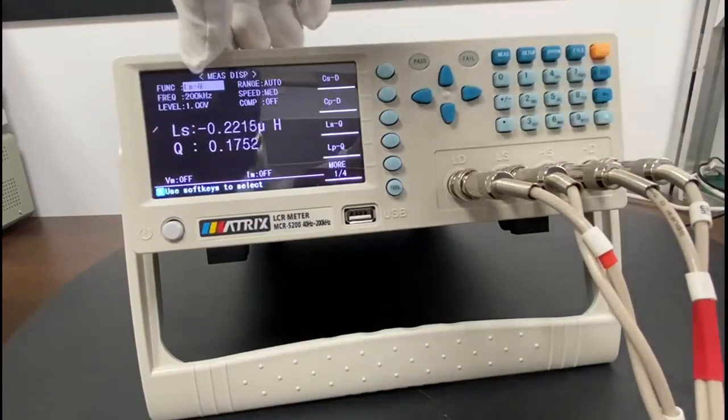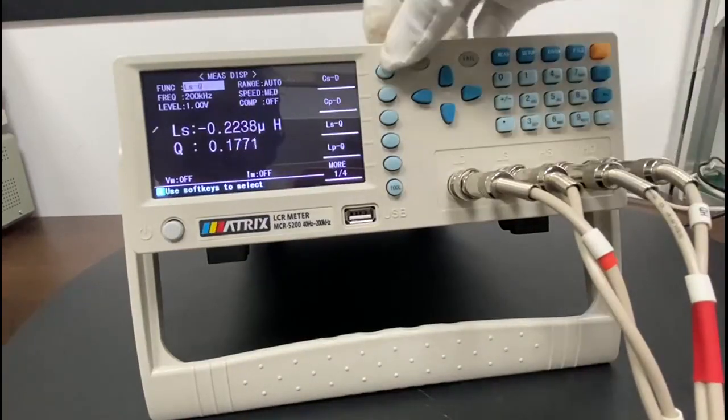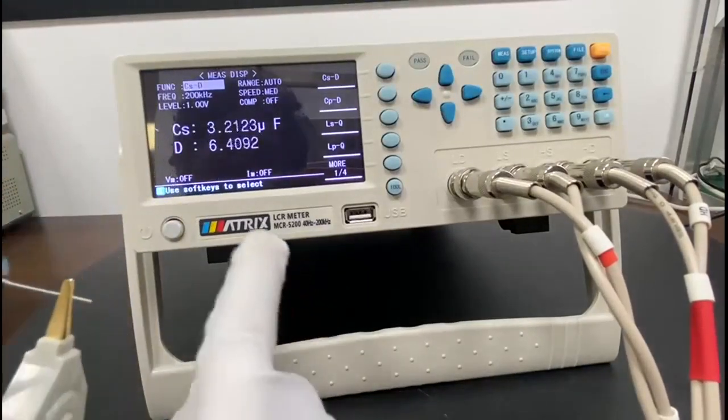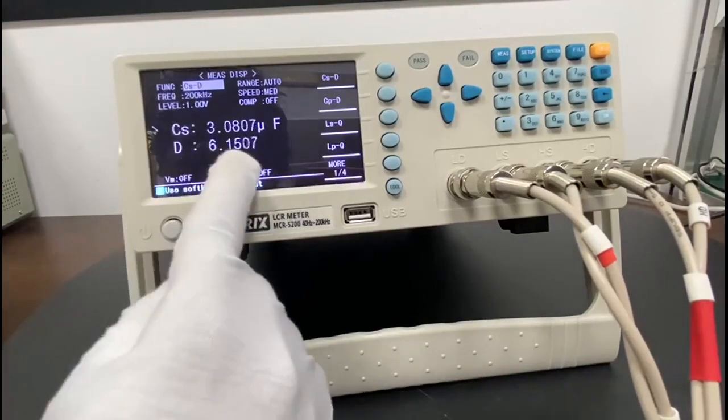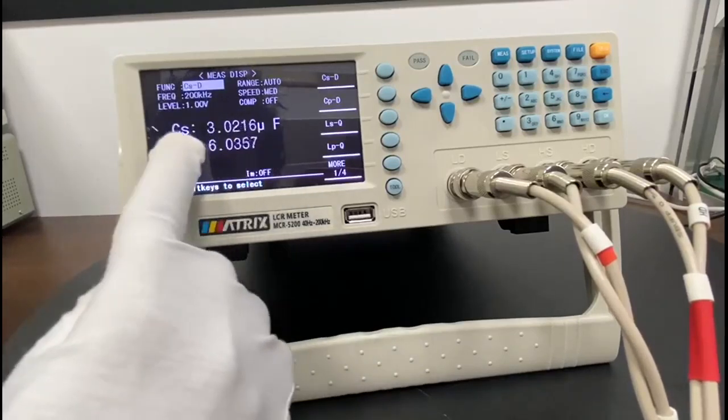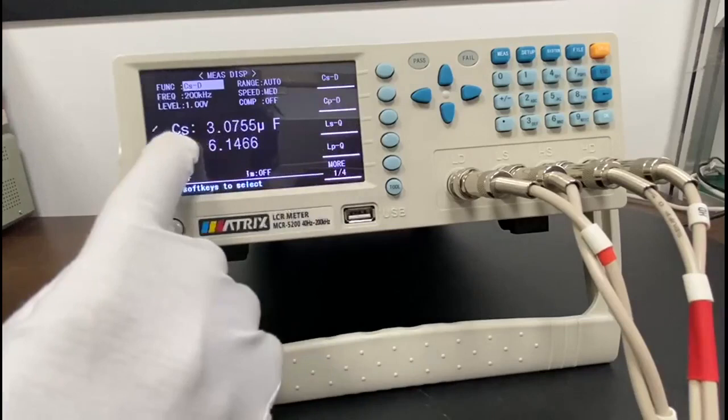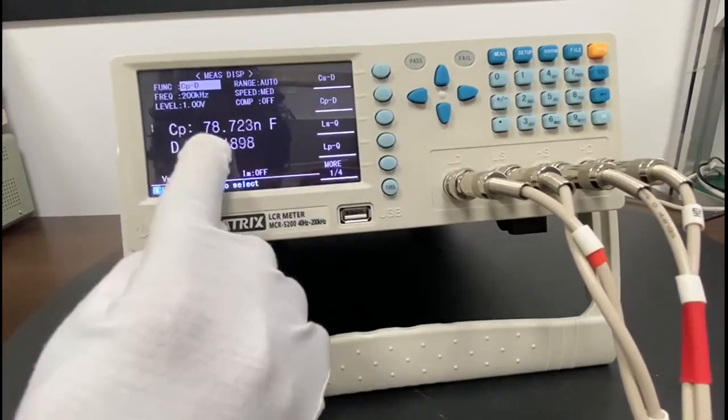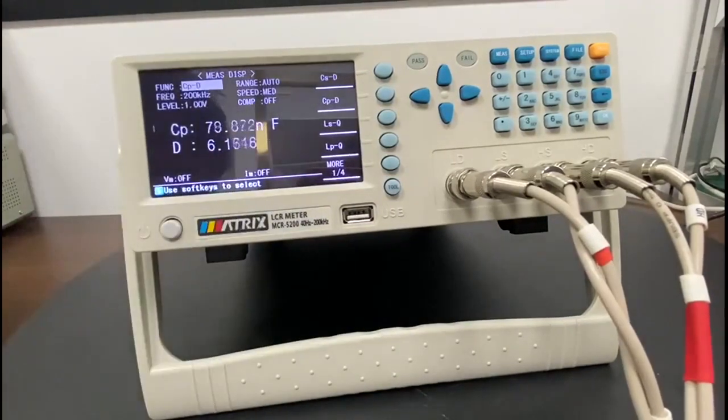Here's the function key. To measure the capacitance I have to go CS. So where is CS? The first one is CS. So just click over here. So you can see the capacitance of this capacitor is 3.13 microfarad and D means loss.